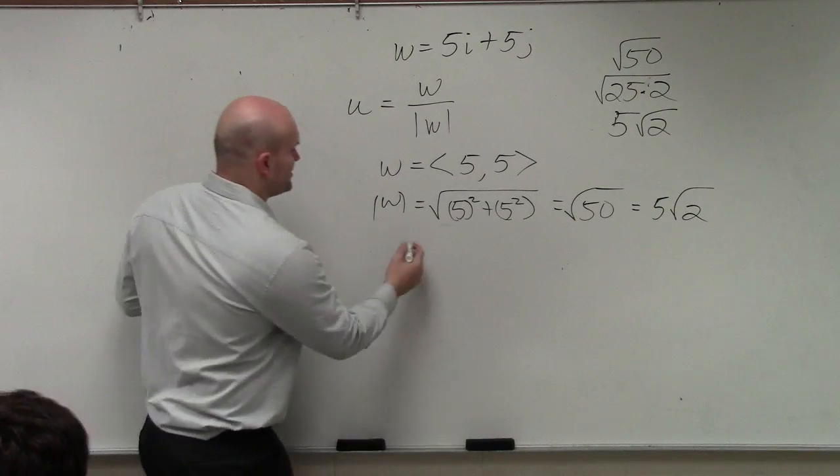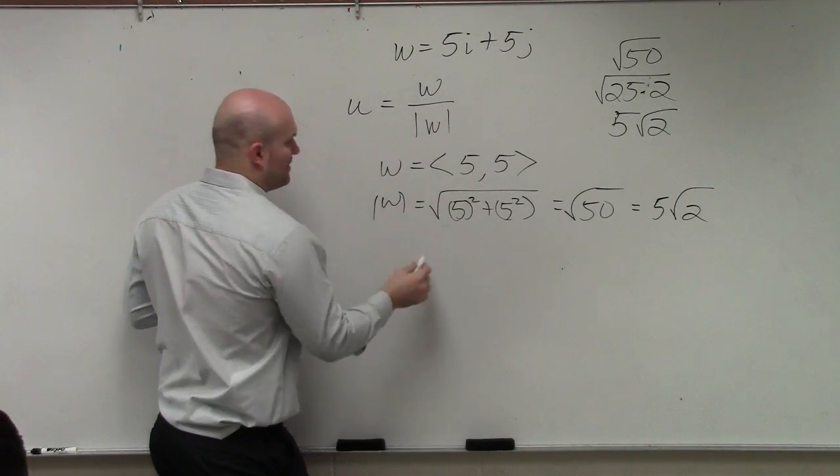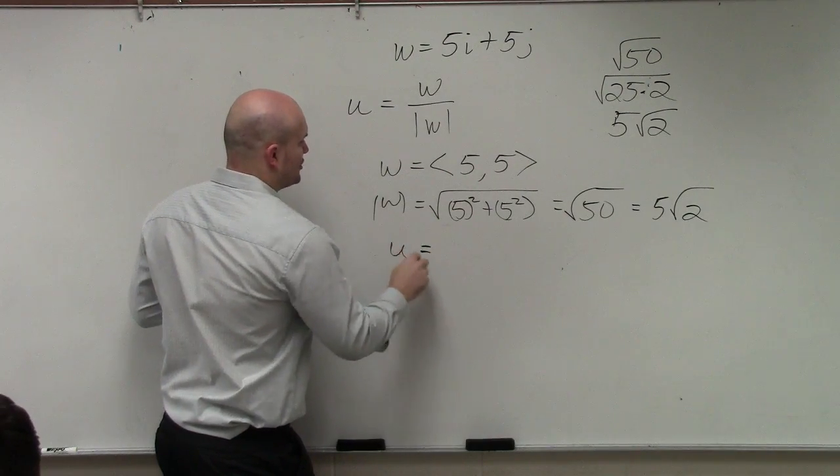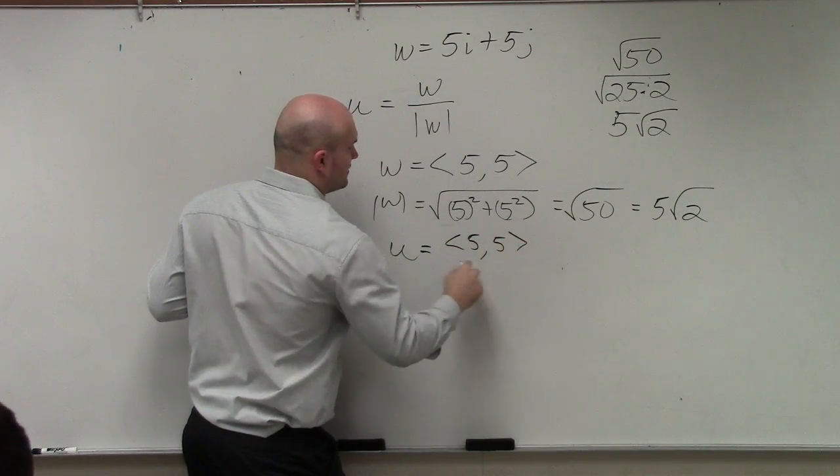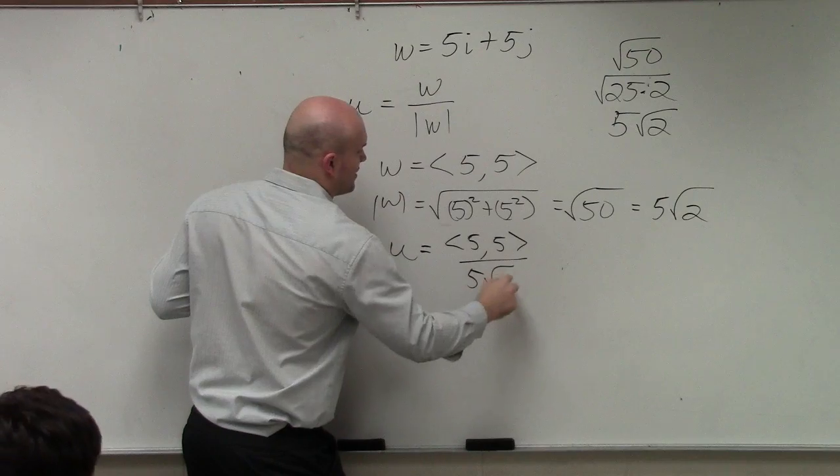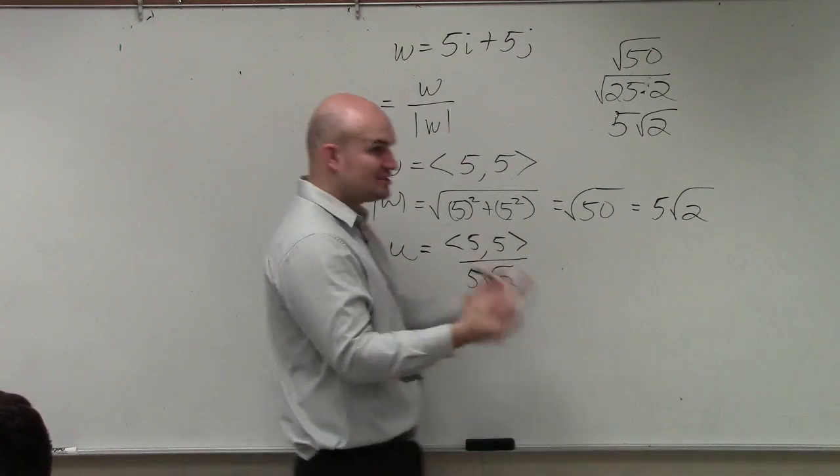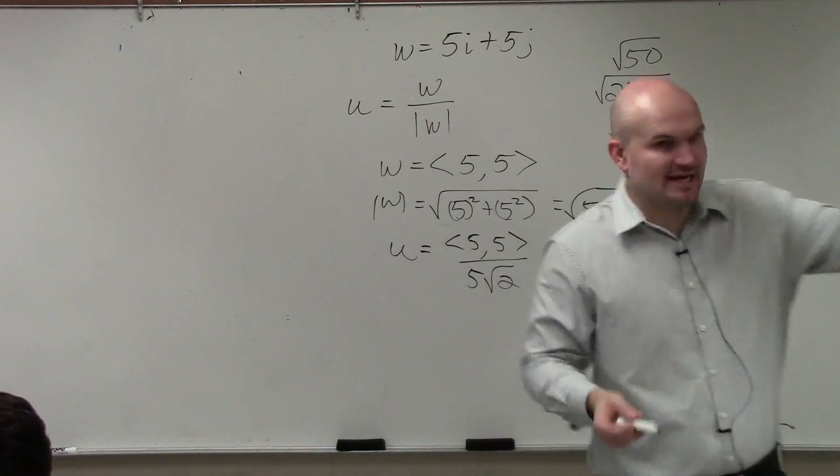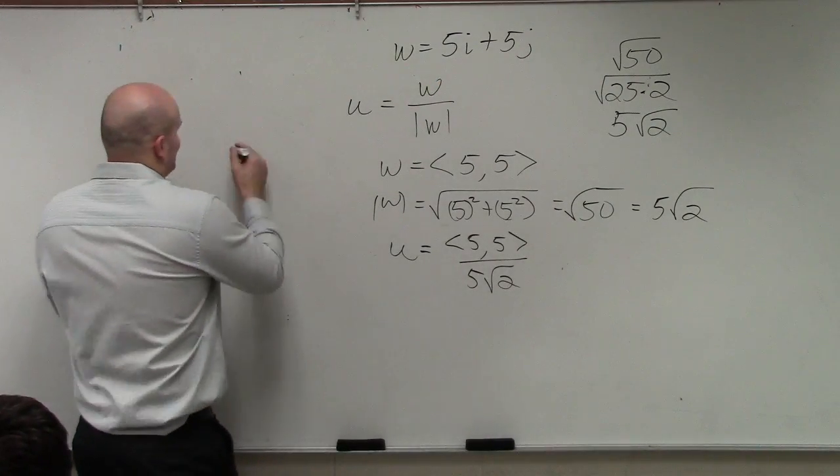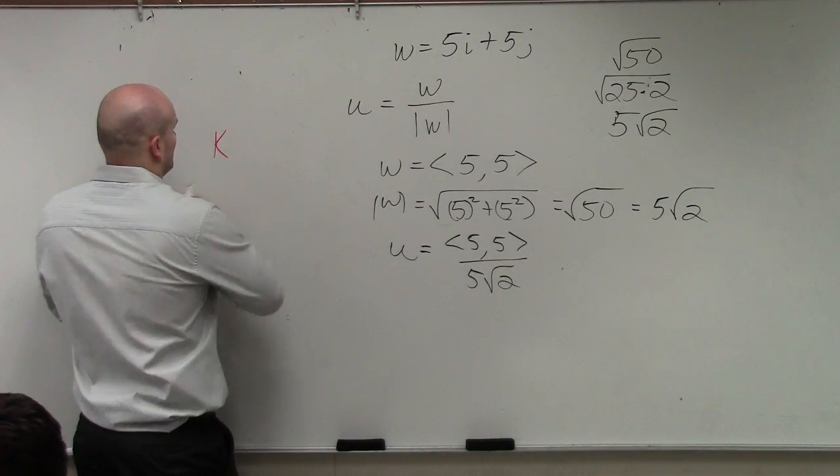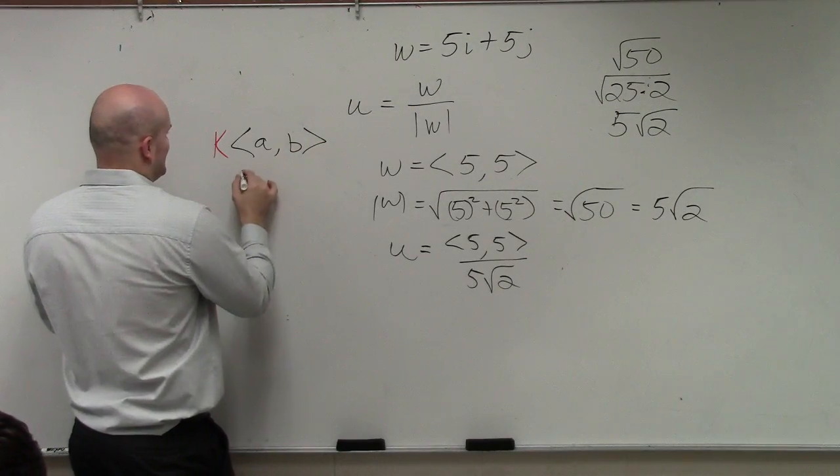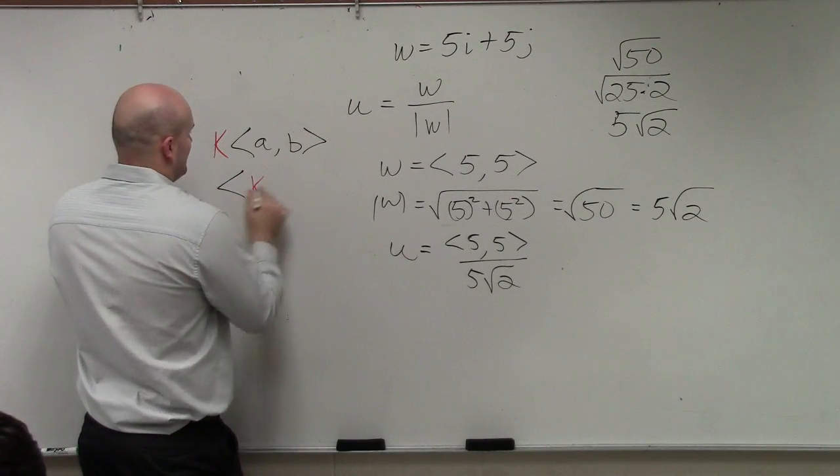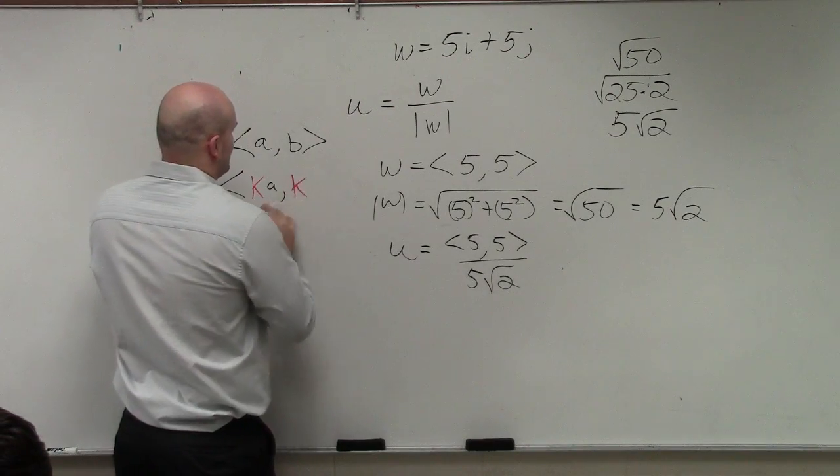So now, all you simply do is take your vector and divide it by your—sorry, our unit vector is basically the vector <5, 5> divided by 5 square root of 2. Well, just like you did a scalar, if you have a scalar, if I had k over <a, b>, I told you guys that that was equal to <k/a, k/b>.